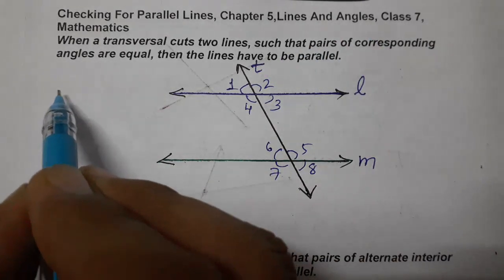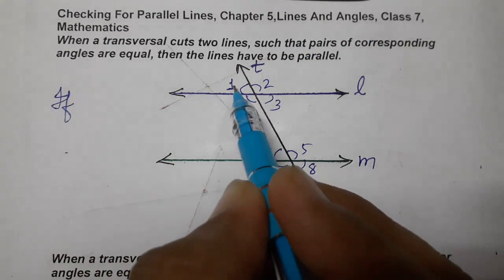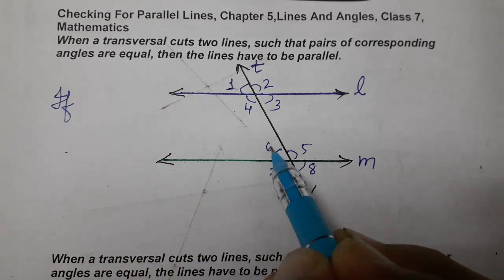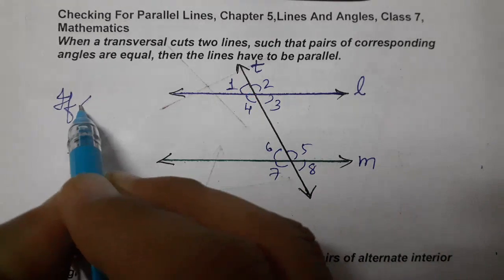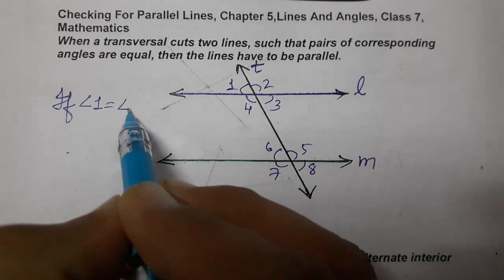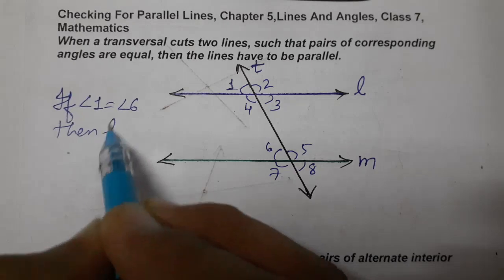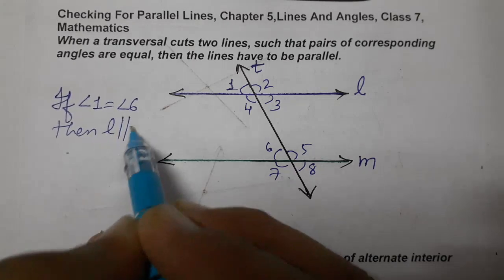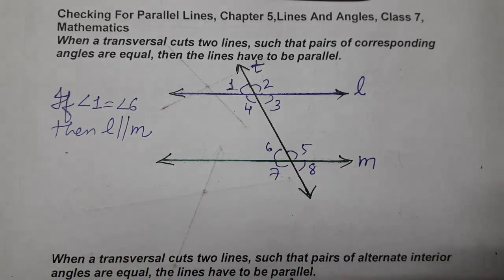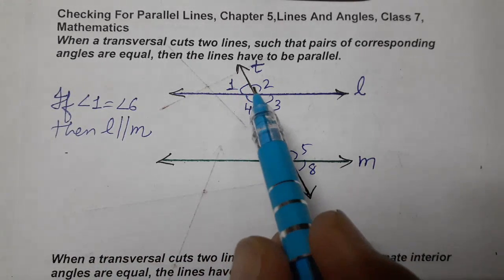If angle one equals angle six, then we can write L is parallel to M. This is the first pair out of four pairs of corresponding angles.